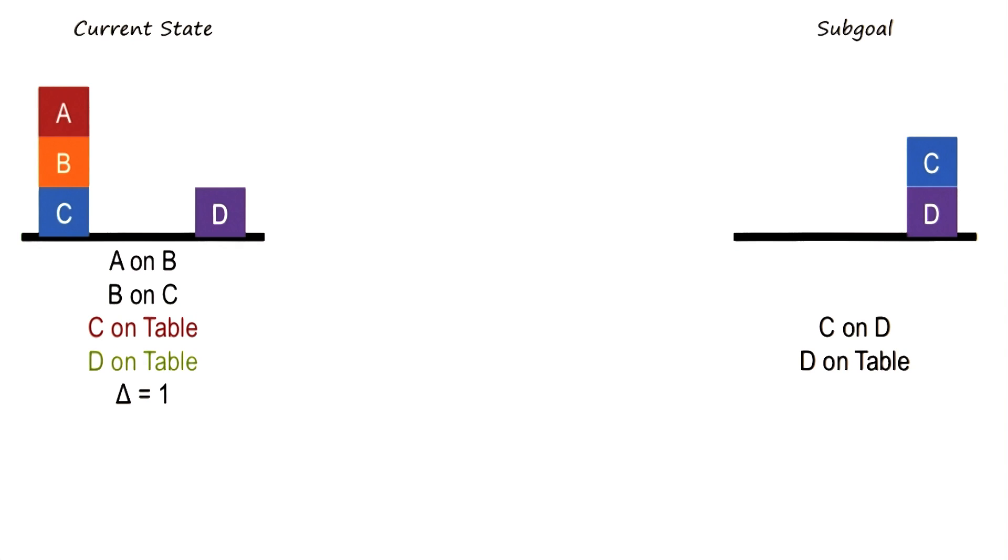So let us now see how mean sense analysis may solve this sub problem, where we are worried only about the sub goal C over D and D on table.